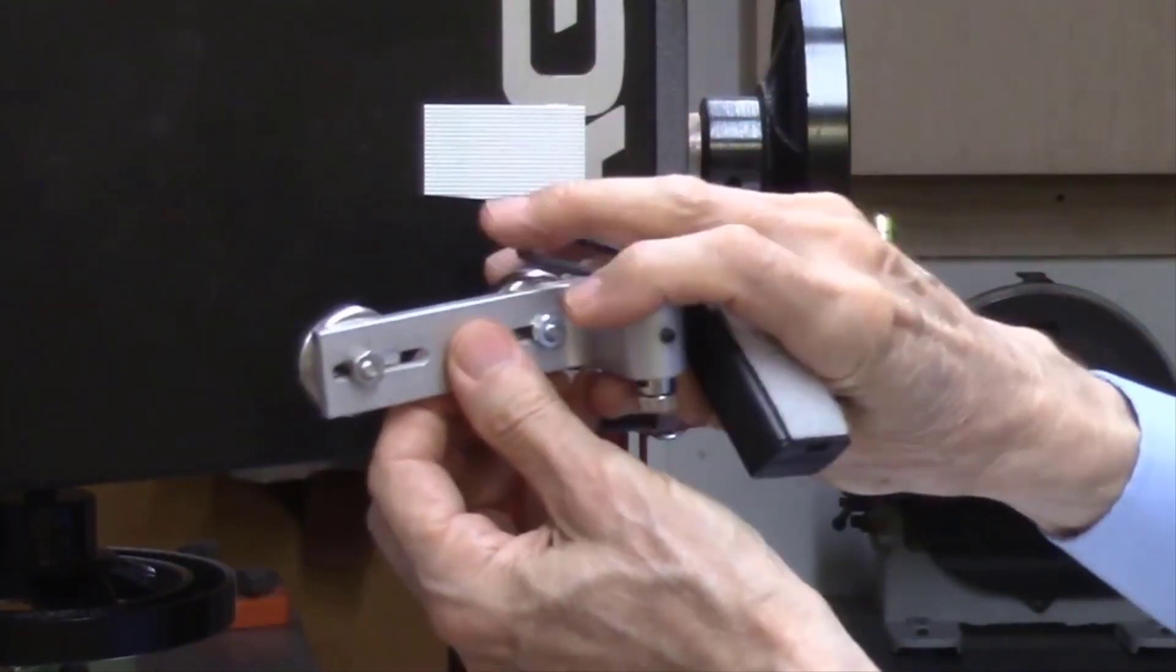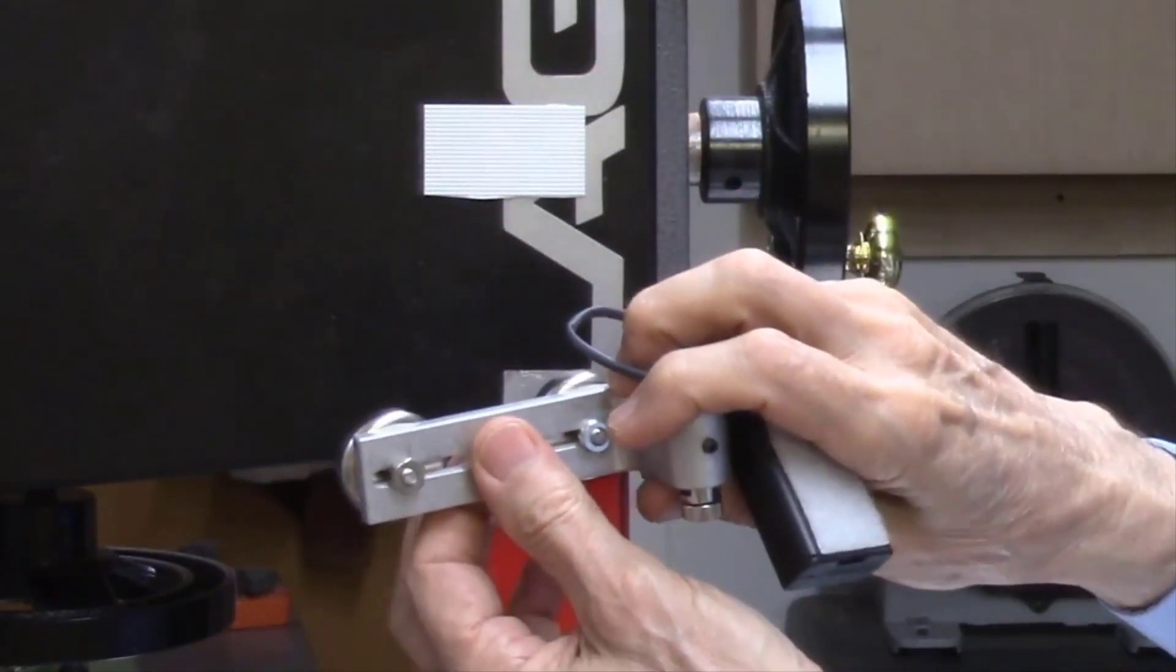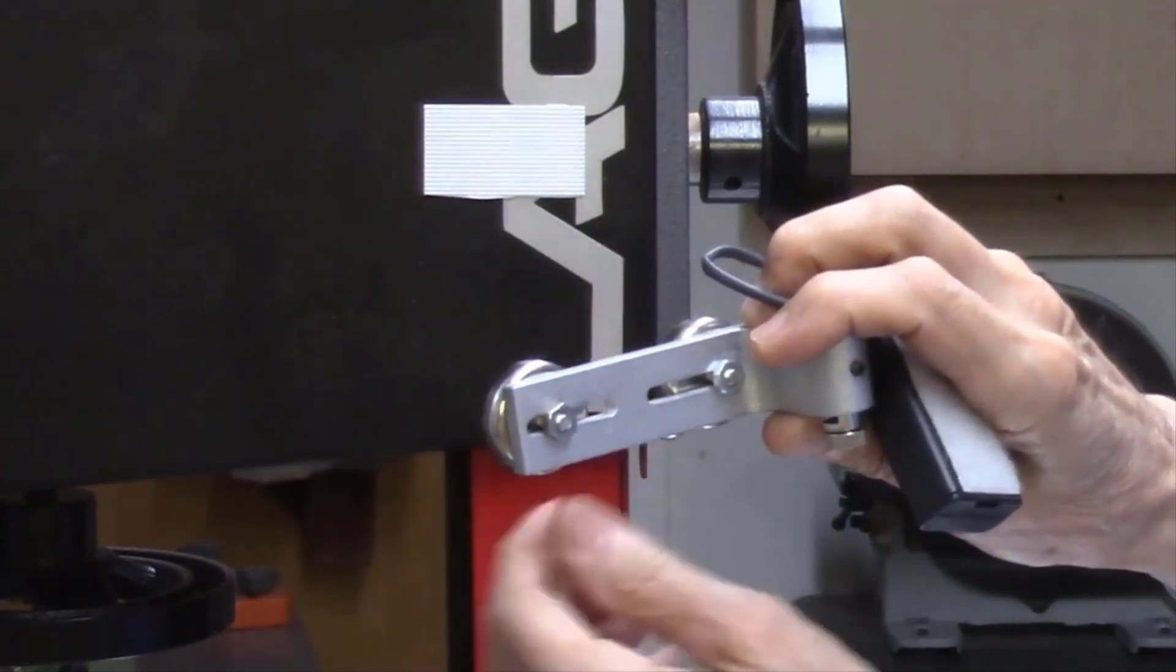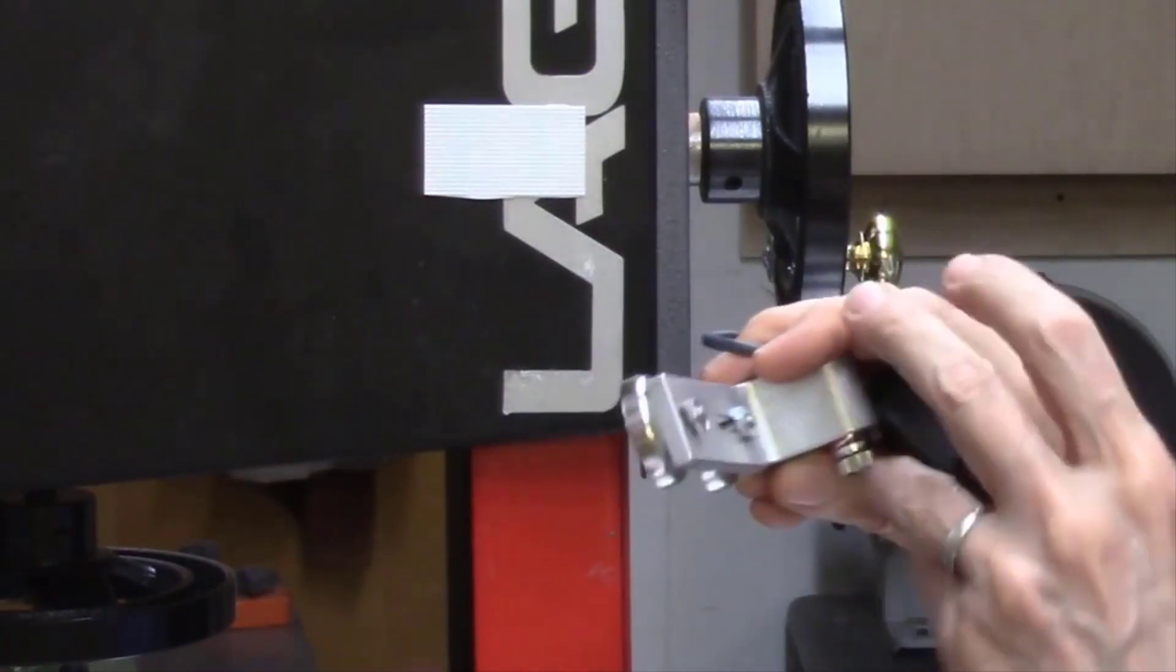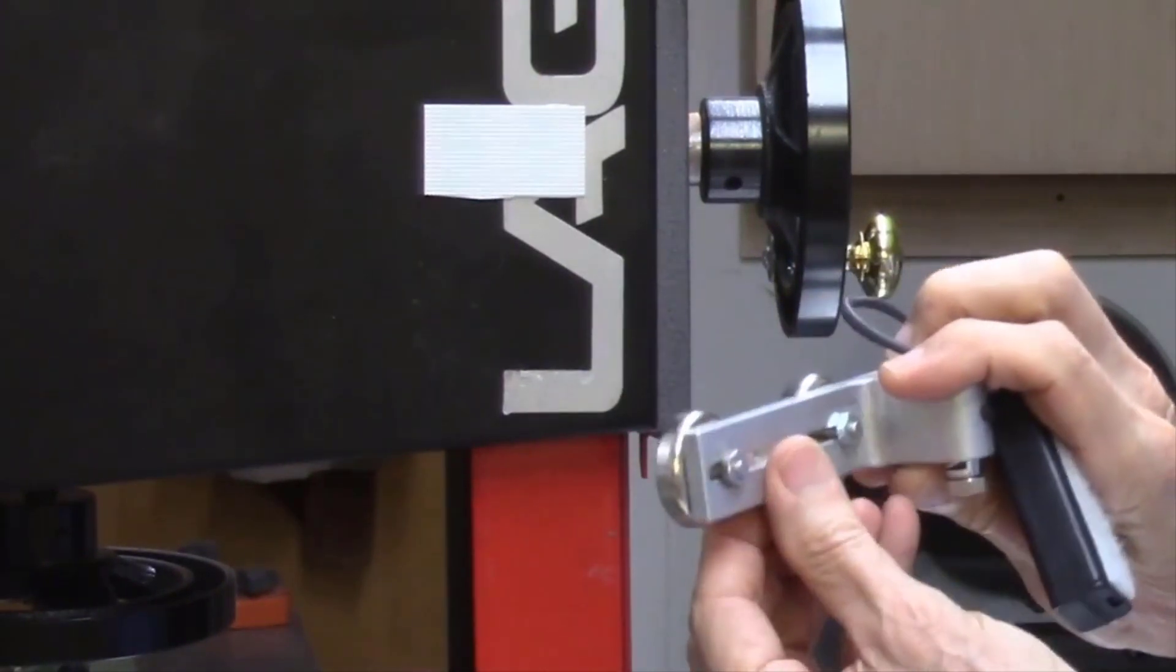Next we want to attach this magnet to the approximate location it is going to be on the bandsaw housing. Be careful, these magnets are quite strong so keep your fingers away from the magnets because you can pinch your fingers if you are not careful.